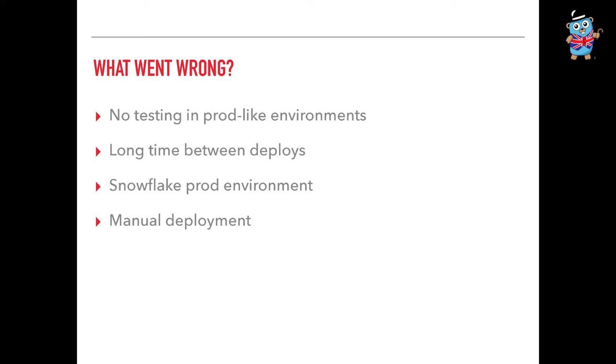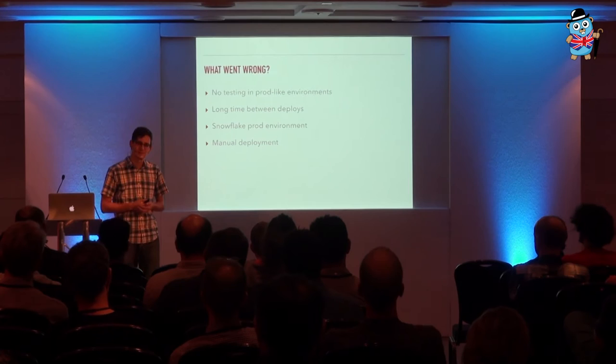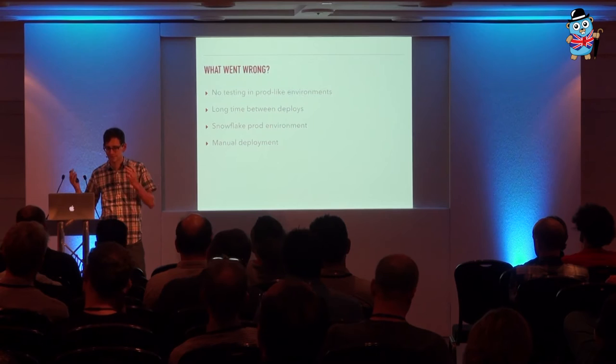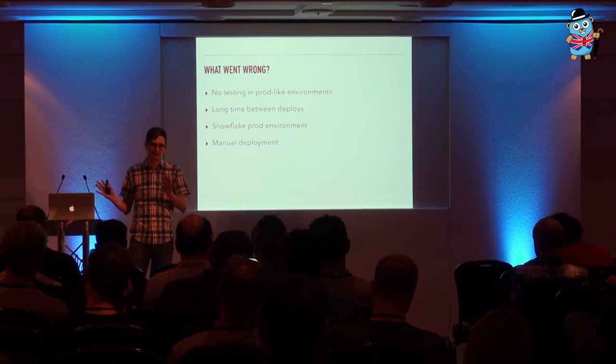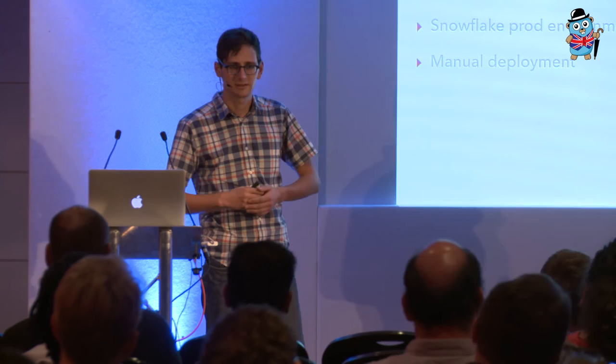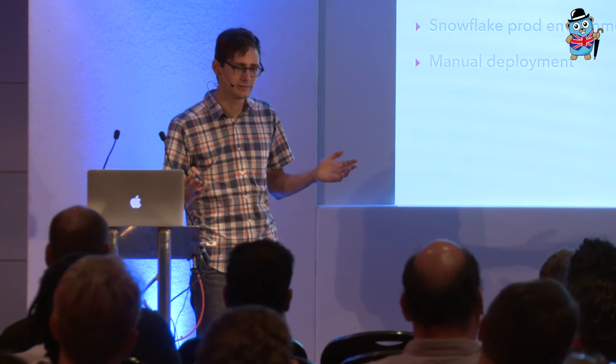Most of you are probably familiar with this sort of situation — and hopefully you aren't in it. But this is a reality for a lot of people. So let's go over what went wrong. We didn't test our app in a prod-like environment. This is important because obviously we don't want failures in prod — if something's going to fail, let's have it fail internally and keep prod stable. There's a long time between deploys — six months — which means a lot of code drift. The longer we go without deploying, the more time there is for changes to break things.